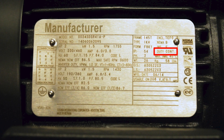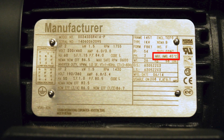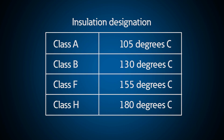There is a time or duty rating, which is how long the motor can run at rated load. Usually you'll see CONT, meaning that it can do so continuously. You'll also see the max ambient temperature for the surrounding environment that the motor can be in. There is an insulation designation given by a letter A, B, F, or H. The higher the letter is in the alphabet, the higher the temperature the windings can withstand for longer periods of time.